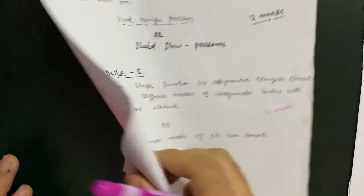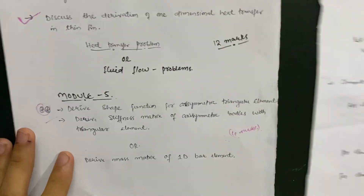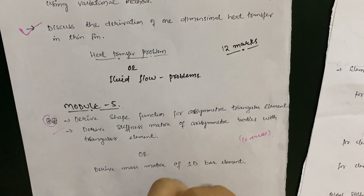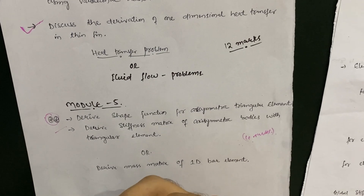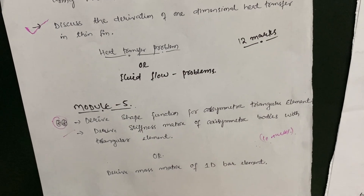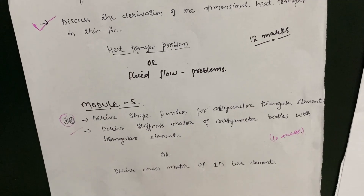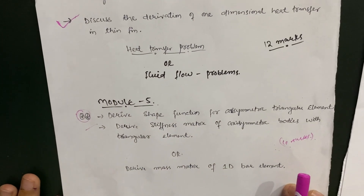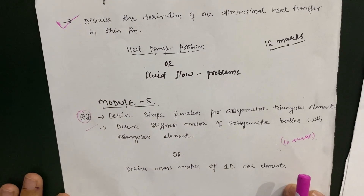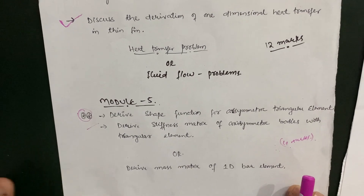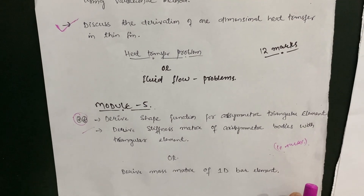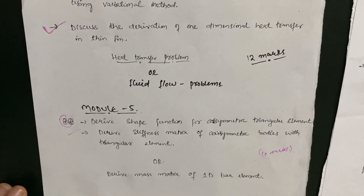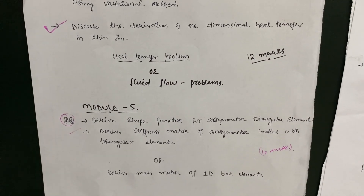Following this strategy, you can score around 60 marks out of 100 and pass with ease. I hope you found this video on how to pass Finite Element Method beneficial. If you did, please share it with your friends who are facing problems in this subject, as it is a paramount concern for most VTU students. Thanks for watching.